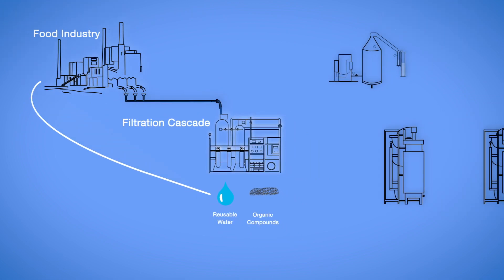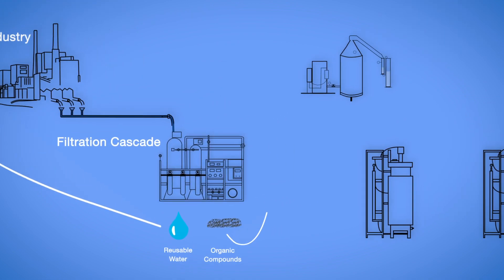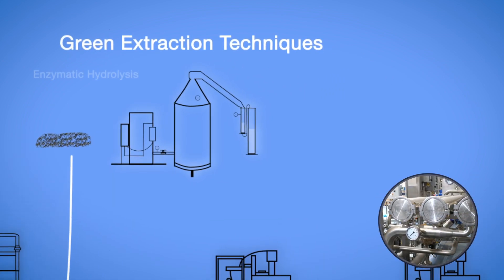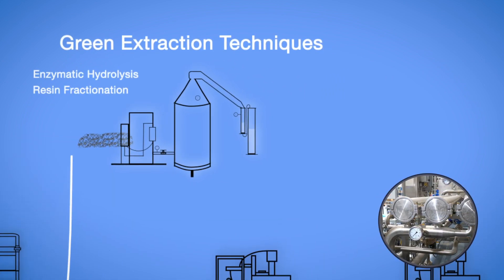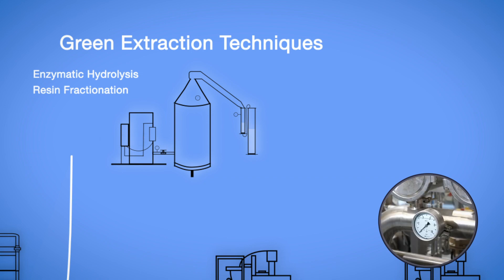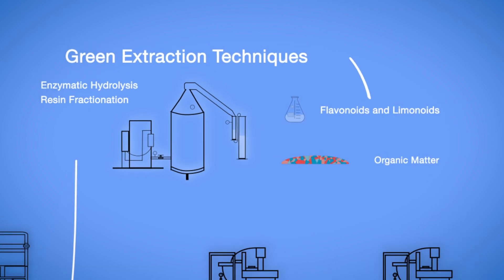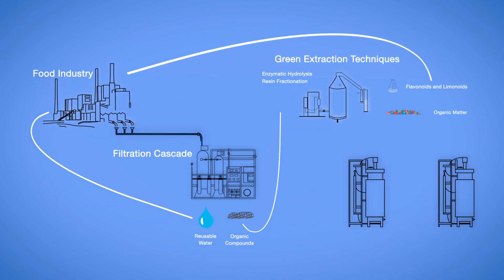The recovered compounds are processed with green extraction techniques, such as enzymatic hydrolysis and resin fractionation, as an alternative to the use of hazardous solvents for the extraction of high-value added compounds, such as flavonoids and limonoids, that can be used in the food or cosmetics industry.